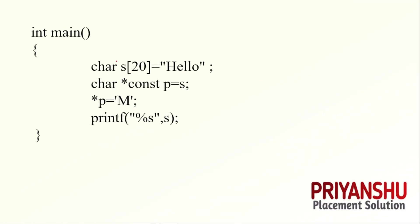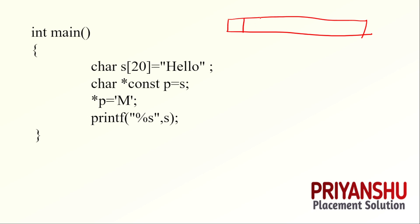The first question is based on pointers. We have a character array S of 20 — meaning a character array of length 20. For example, indices 0 through 19. The string 'hello' is stored in it: H, E, L, L, O, and the remaining positions are empty right now.